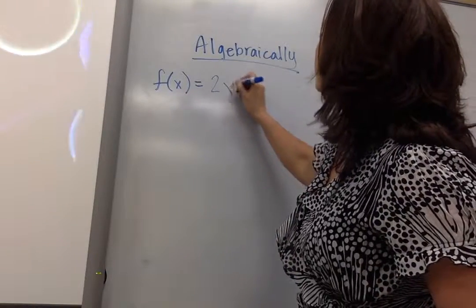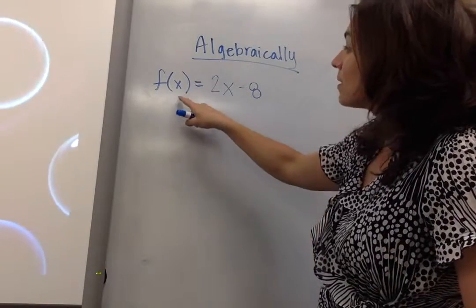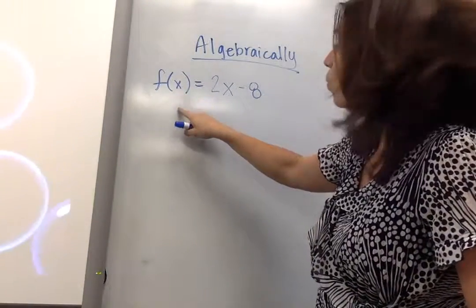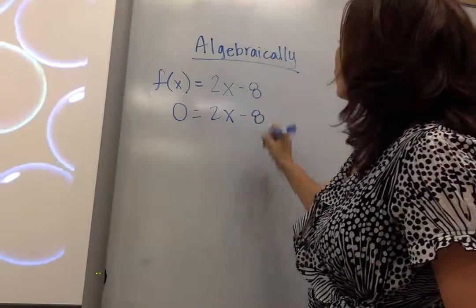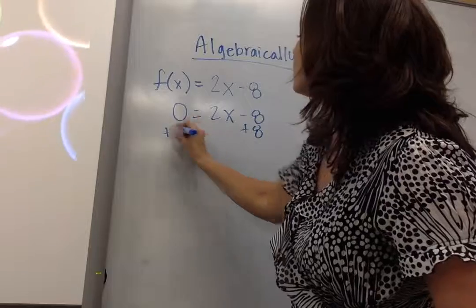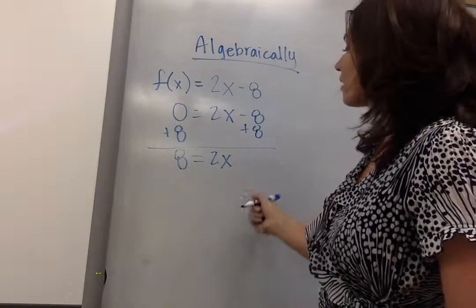Let's say I have 2x minus 8. Same logic. I know my y is going to be 0, so I plug in 0 for y and solve for x. I add 8 to both sides, additive inverse, and I get 8 equals 2x.